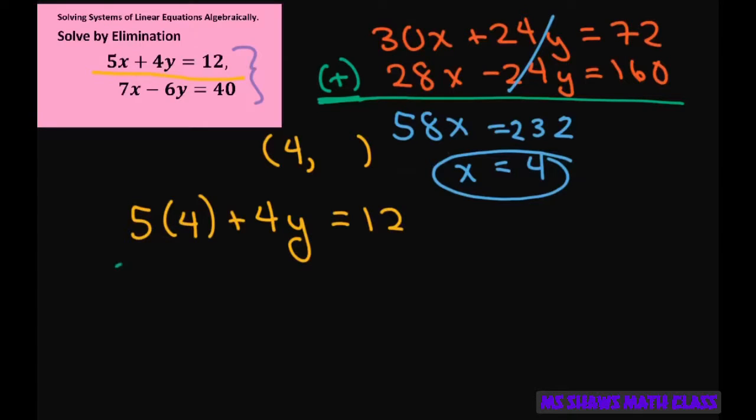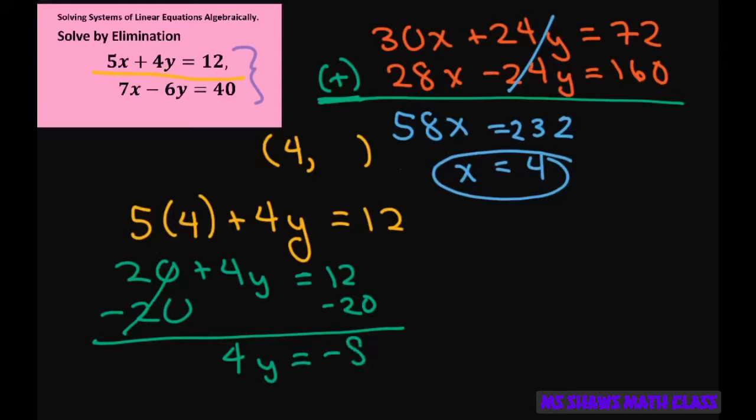So we have 5 times 4 plus 4Y equals 12. This gives us 20 plus 4Y equals 12. Now let's subtract 20 from both sides. That gives me 4Y equals negative 8. Divide both sides by 4, so Y is negative 2.